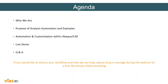This is the agenda for today. First, we would like to introduce the company — who we are and what we do. Next, we're going to jump straight to the main topic of the webinar, which is the purpose of analysis automations, and we're going to cover some examples. Then we're going to look at the automation and customization of Abacus CAE, and we'll wrap up with live demos and a Q&A. If you'd like to discuss your workflow with us, please drop a message during the webinar for a free consulting call.